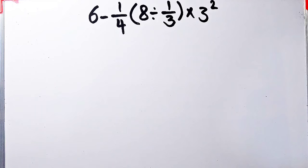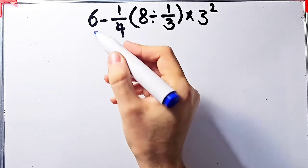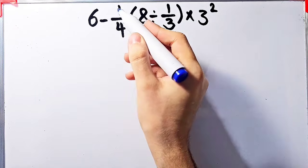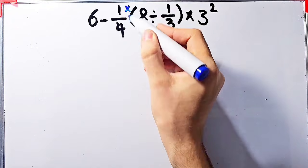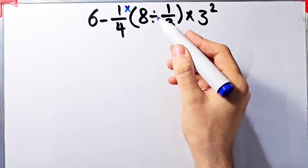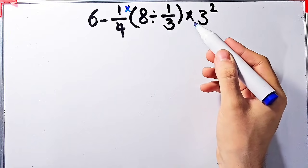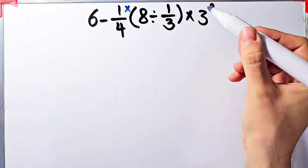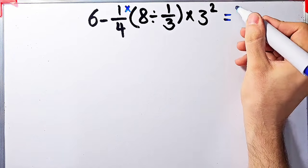Let's solve another question about the PEMDAS rule: six minus one over four, then times open parenthesis, eight divided by one over three, times three to the power of two. What is the answer of this question? Can you solve it?